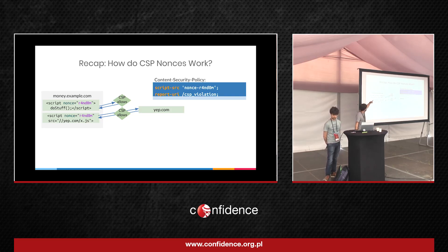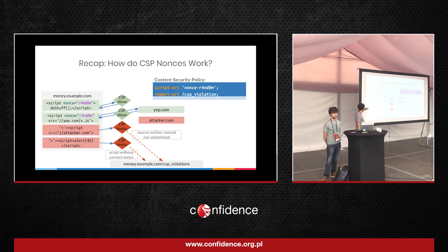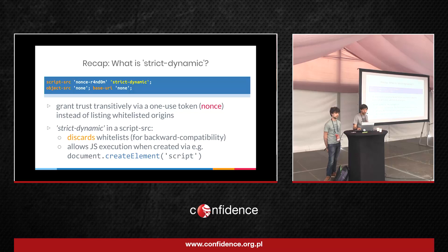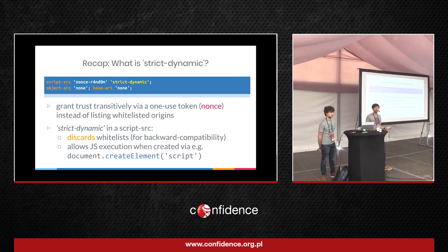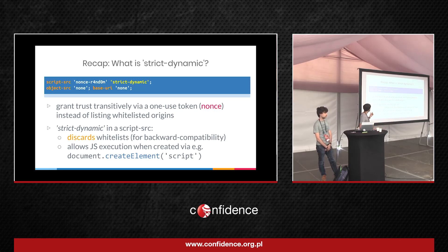These scripts will execute because they have the random nonce matching the one in the policy. This nonce must be random for every single response — otherwise the attacker can guess or know it. An attacker can inject script tags, but they don't know the nonce attribute, so the browser won't execute it. The problem is if you load a Twitter widget or a plus-one button or another JavaScript library that dynamically creates script tags — it will fail because the library does create-element-script but doesn't know the nonce on the page. This breaks a lot of things with a nonce-only policy, which is why nonce-only policies have been around for years but no one uses them.